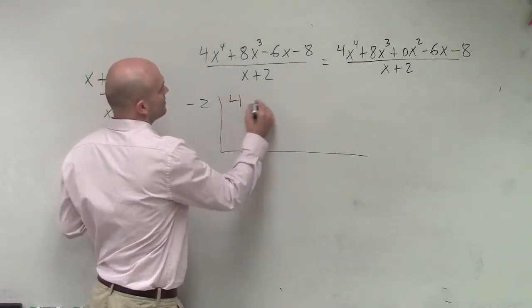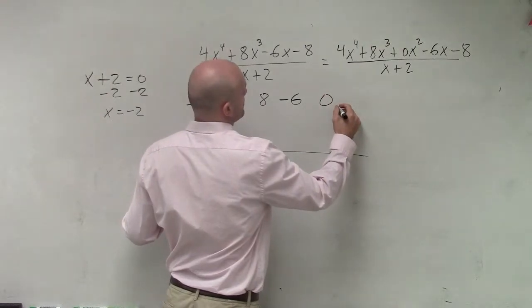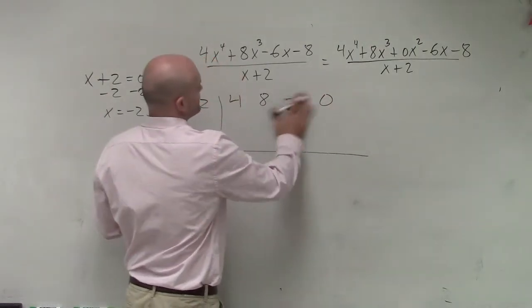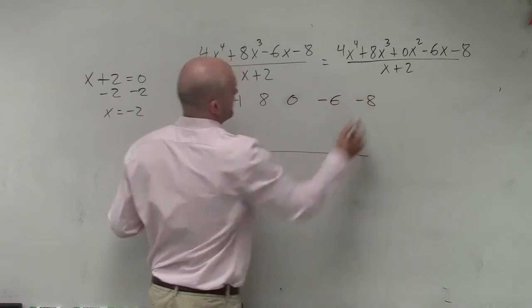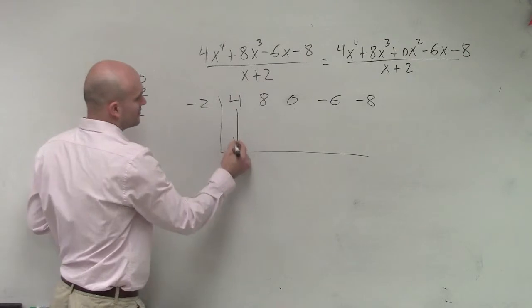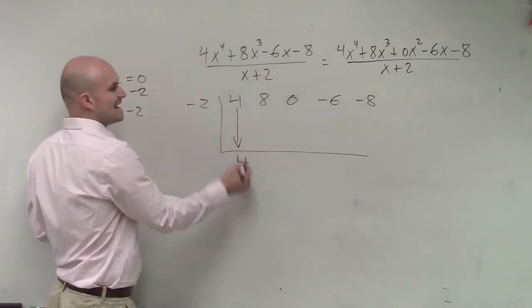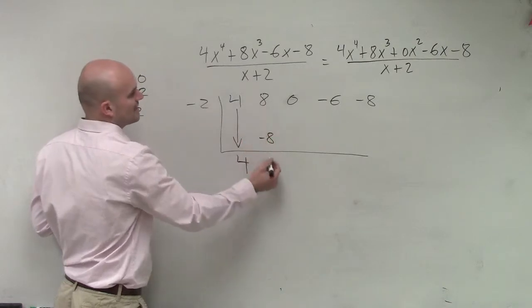So now I do 4, 8. Sorry. 4, 8, 0, negative 6, negative 8. So first one's a freebie, right? Bring it straight down. 4. Then diagonally you multiply. 4 times negative 2 is negative 8. 8 plus negative 8 is 0.